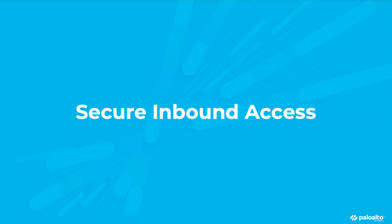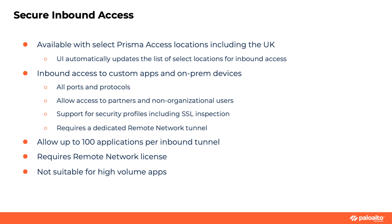Next we have secure inbound access. This feature will let customers deploy Prisma Access as a front end and allow partners and non-organizational users to access applications and devices hosted at a remote network site. This is available with select locations including the UK, and the Panorama UI will automatically update the list to show possible locations for inbound access. It allows access to custom apps and on-prem devices using all ports and protocols. Security profiles including SSL inspection and access policies will be required. This requires a dedicated remote network tunnel — an existing remote network cannot be used. Each inbound tunnel allows up to 100 applications and requires a remote network license. This is not suitable for high-volume apps.